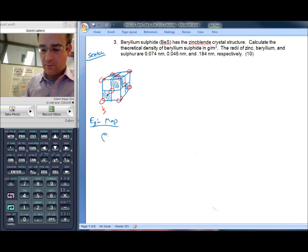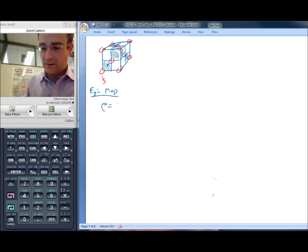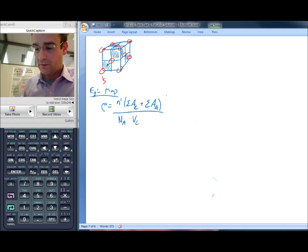Let's get into our equation map. The theoretical density is going to be equal to n prime times the sum of the atomic weights of the cations in the formula unit plus the sum of the atomic weights of the anions in the formula unit divided by Avogadro's number divided by the volume of the unit cell.